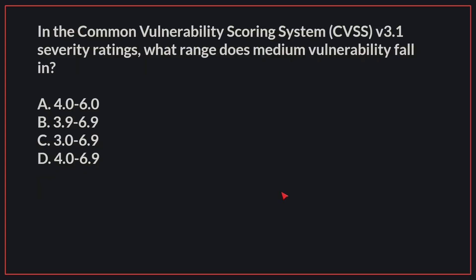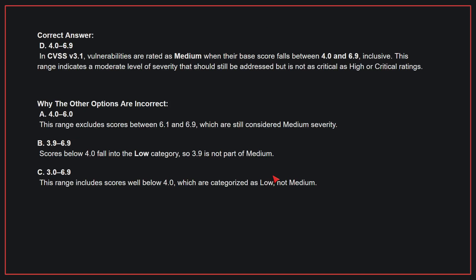In the CVSS version 3.1 severity ratings, what range does medium vulnerability fall in? The correct answer is D: 4.0 to 6.9. In CVSS version 3.1, vulnerabilities are rated as medium when their base score falls between 4.0 and 6.9 inclusive. This range indicates a moderate level of severity that should still be addressed but is not as critical as high or critical ratings.